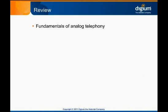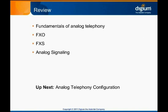In this module, we have reviewed the fundamentals of analog telephony, including the basic terminology necessary to understand how it works. We also introduced the two types of analog ports — FXO lines and FXS stations. We wrapped up with a survey of analog signaling methods still in use today that Asterisk supports. Move on now to the next module to see how analog DOTI interfaces can be set up to connect Asterisk to analog lines and phones.